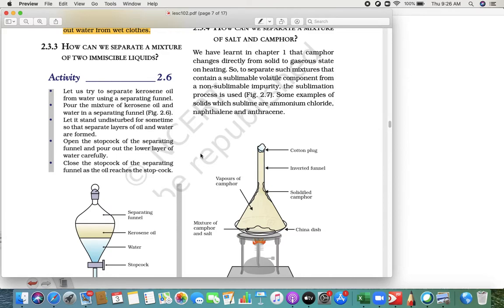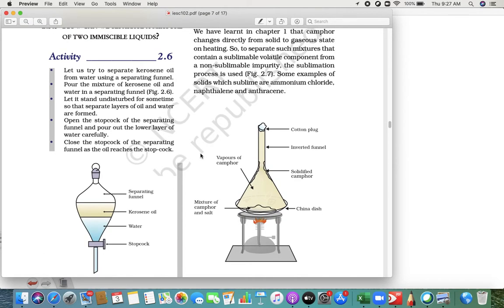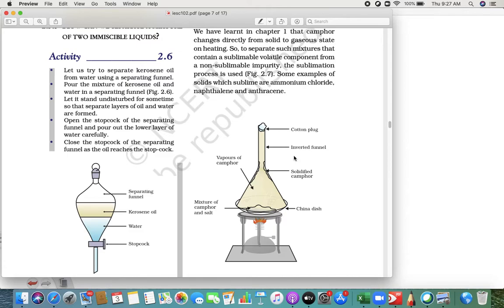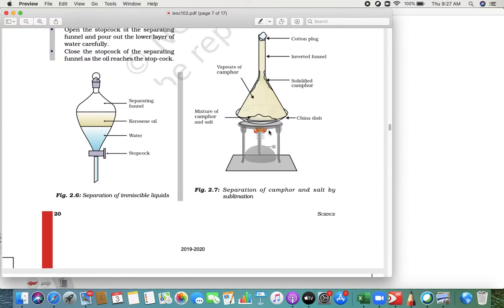In camphor, it can directly go from solid to gas. What we will do is take an inverted funnel like this. You need a china dish over there. You put a mixture of camphor and salt, then you put a cotton plug at the top. The cotton plug is required because when you convert into gas, it does not flow out of it. So you need solid camphor and a salt mixture. When you heat it, the camphor gets directly converted into gas.